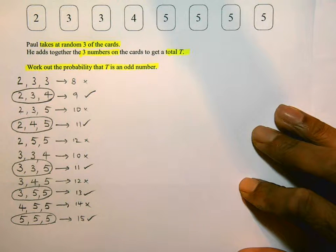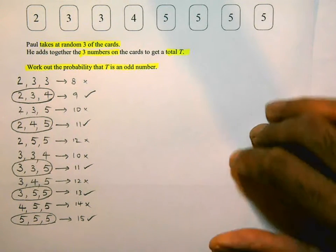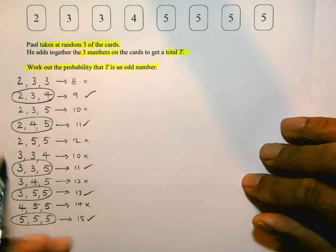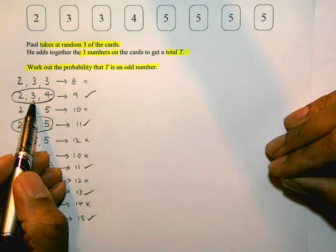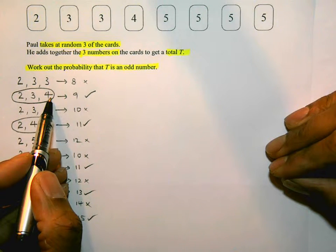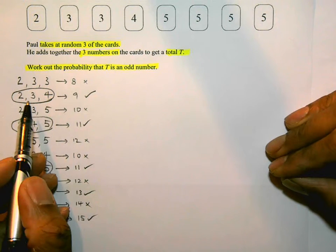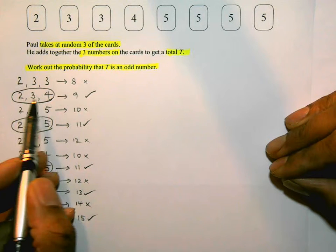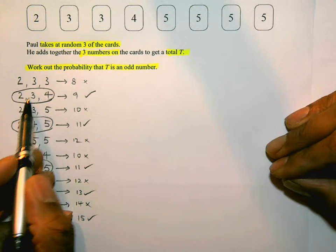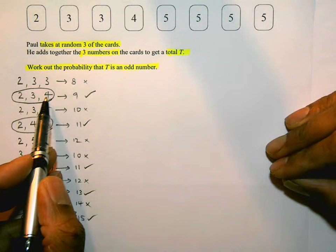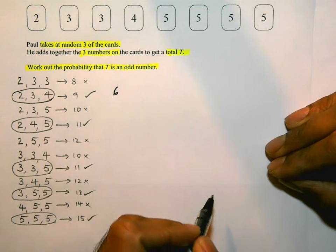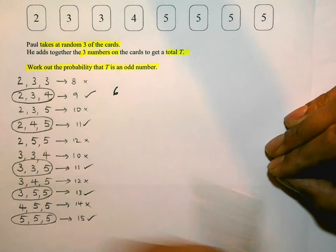So there are 5 combinations that could give an odd number. Now I need to look at the probabilities and the number of ways he can get each of those. For the first one — picking a 2 first, a 3 second, and a 4 third — thinking about a tree diagram: there are 3 ways to get a 2, 2 ways to get a 3, and 1 way to get a 4. So there are 6 different combinations of picking 2, 3, and 4.